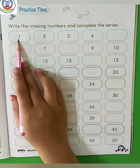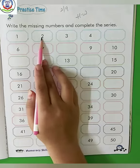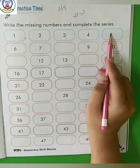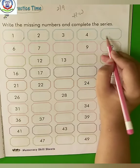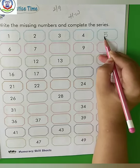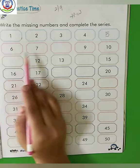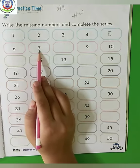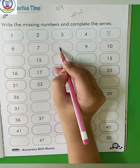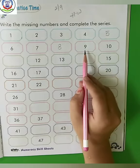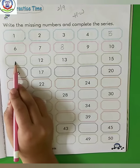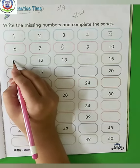See, which number is this? 1, 2, 3, 4. After 4, what will come here? Number 5. Next, 6, 7. After 7, what will come? Number 8. Then 9, 10. After 10, what will come? 10 plus 1, 11.